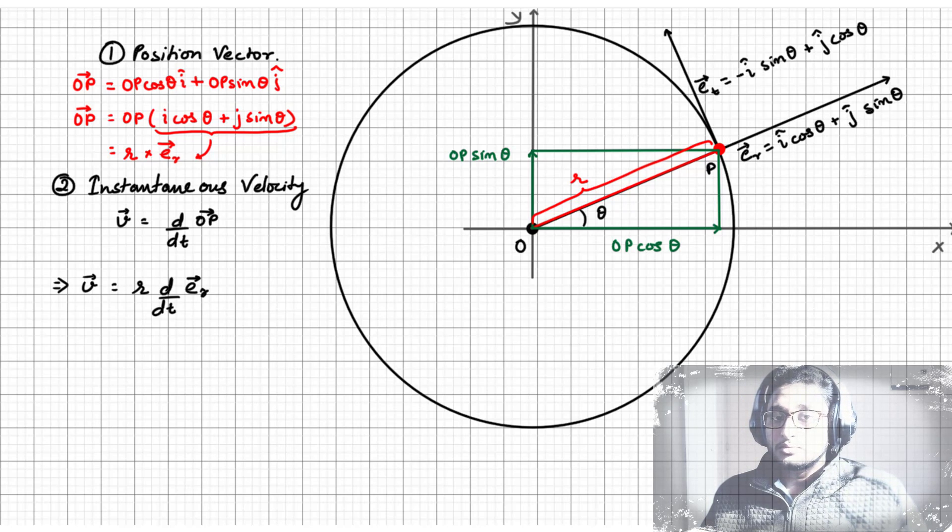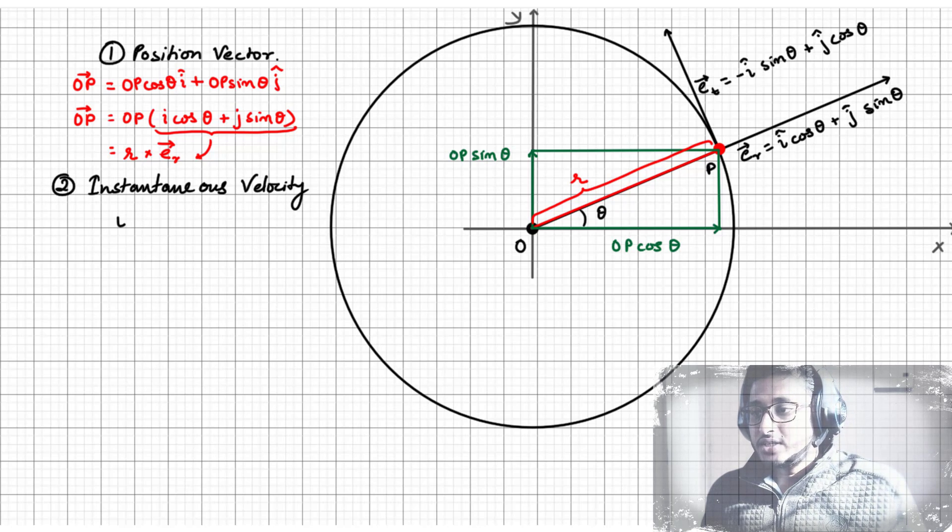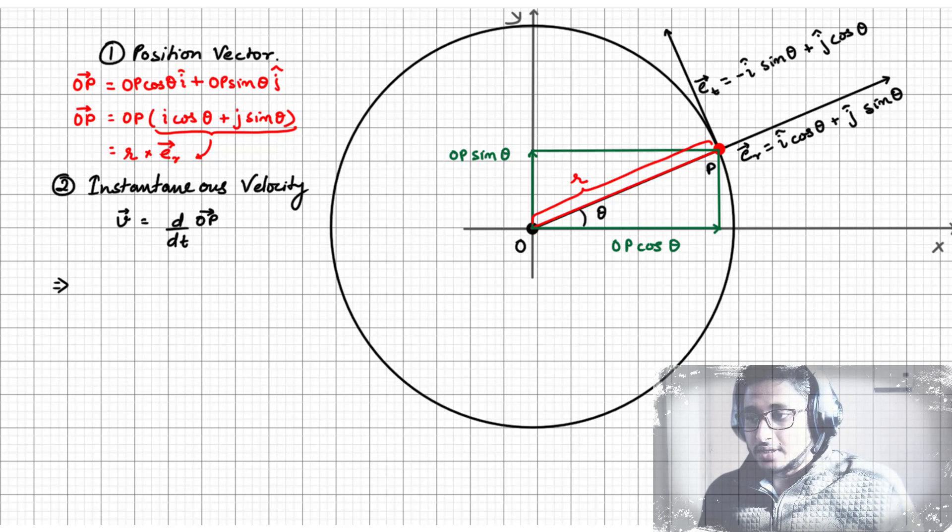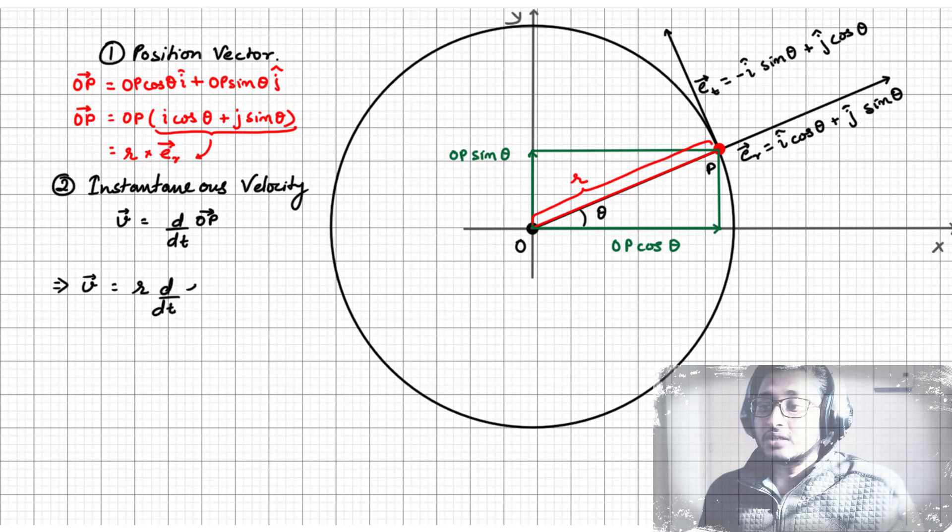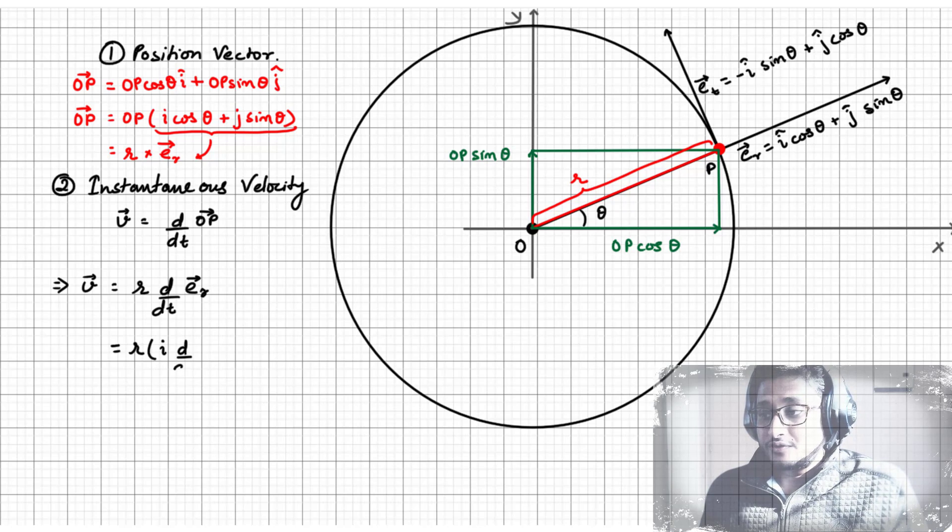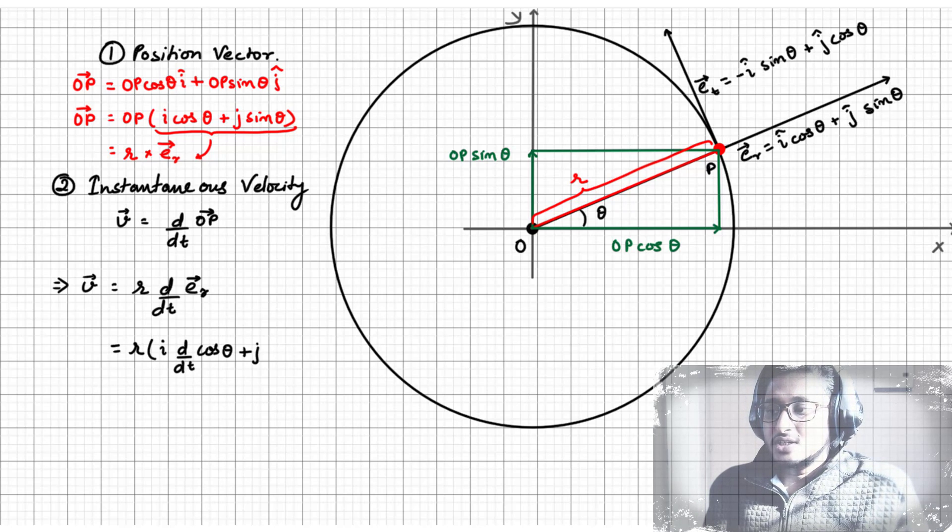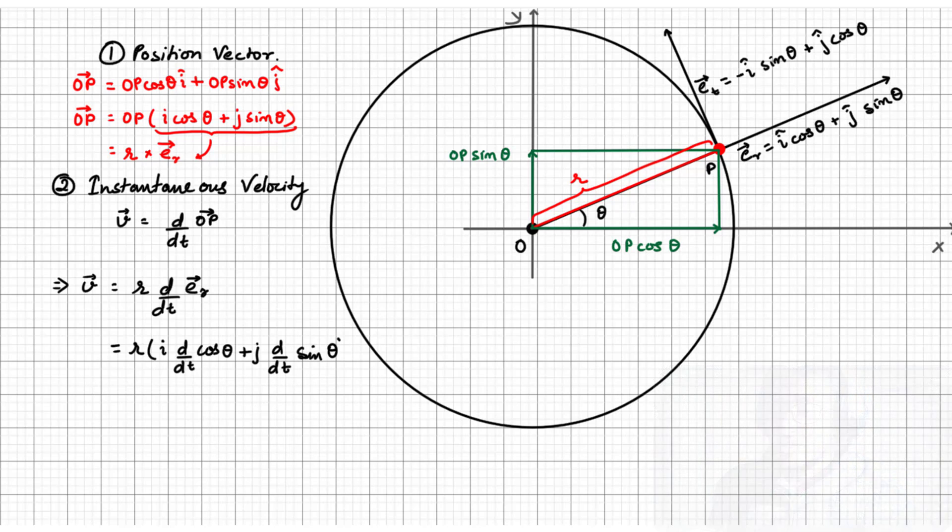The instantaneous velocity is the differential of position vector with respect to time. Since r is a constant, the equation can also be written like this. Now the coefficient of i is cos theta, which is a function of theta, and theta is a function of time, so it can be differentiated as we did in the past. And so will be done with the coefficient of j.